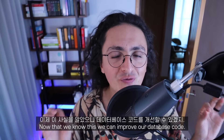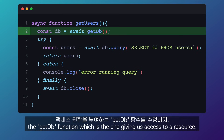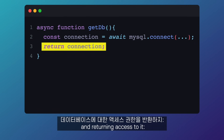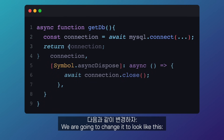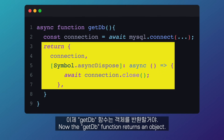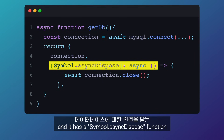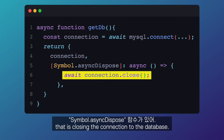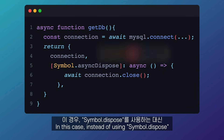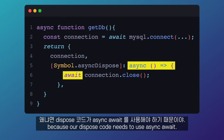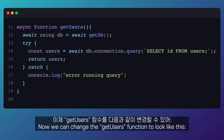Now that we know this, we can improve our database code. First, we have to modify the `getDB` function, which is the one giving us access to a resource. Internally, it connects to the database and returns access to it. We're going to change it so that `getDB` returns an object with a connection to the database, and a `Symbol.asyncDispose` function that closes the connection. In this case, instead of `Symbol.dispose`, we use `Symbol.asyncDispose` because our dispose code needs to use async/await.